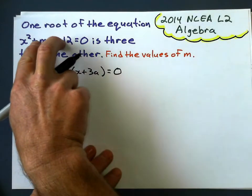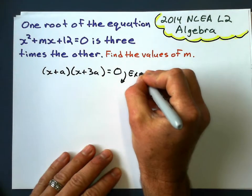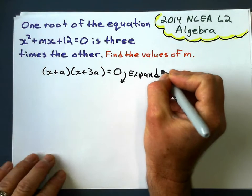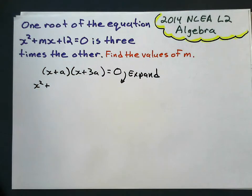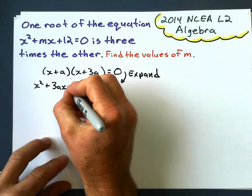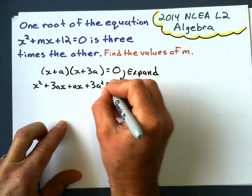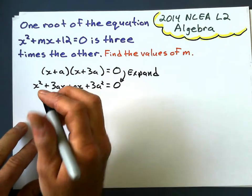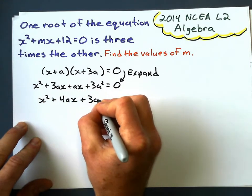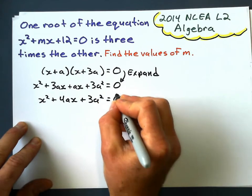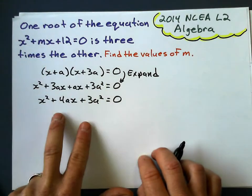What we're going to do is make this equation look like the original, which means expand the brackets. When I expand x minus a times x minus 3a, I get x squared plus 3ax plus ax plus 3a squared equals 0. Collecting terms, that gives x squared plus 4ax plus 3a squared equals 0.